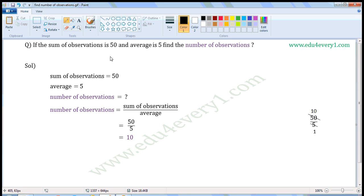If the sum of observations is 50 and average is 5, find the number of observations.